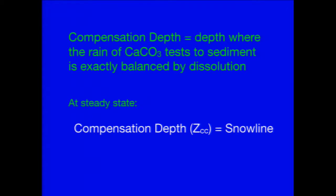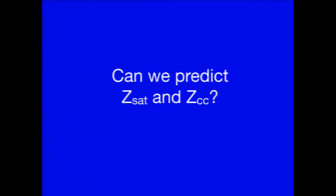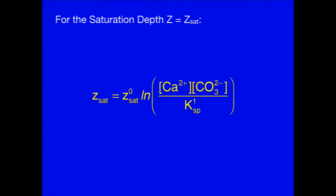I'm going to talk about changes in saturation and compensation depths. Can we predict these things? Yes, we can. These are very simple formulas for these depths. This is the one for the saturation. It has this term — dissolved calcium multiplied by dissolved carbonate divided by KSP, the solubility product at one atmosphere pressure. You calculate that quantity, multiply it by a scaling of about 5,500 meters, and you get a very good representation of where the saturation depth is, at least for the present oceans.